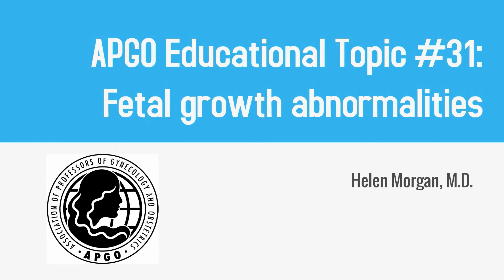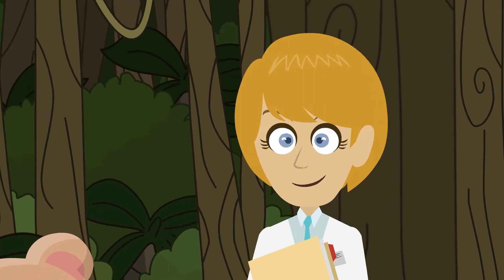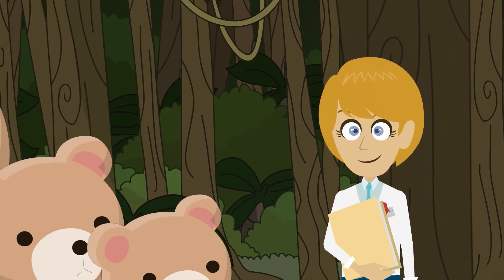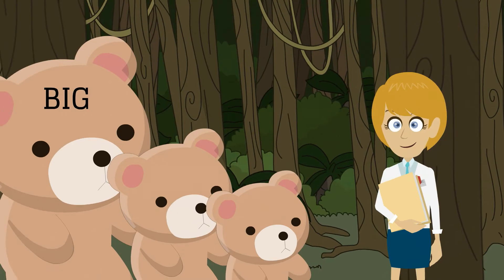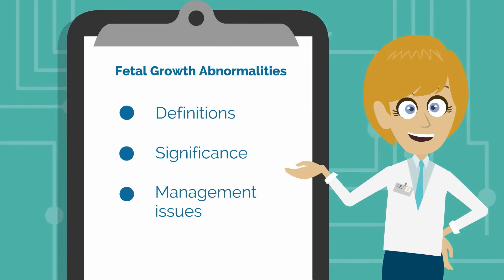APCO educational topic number 31: fetal growth abnormalities. Once upon a time, there was a medical student named Goldilocks, and she encountered three pregnancies during her labor and delivery rotation. One pregnancy was big, one pregnancy was small, and the third pregnancy was just right. In this video, we will discuss definitions, significance, and management issues for fetal growth abnormalities.